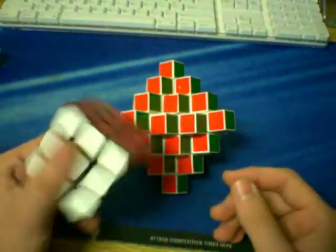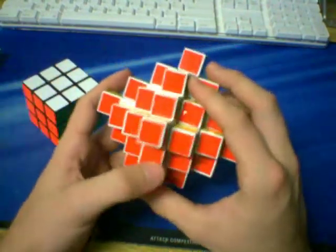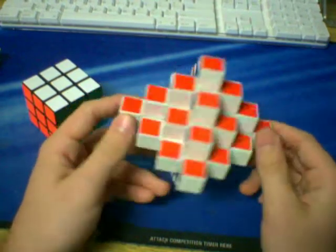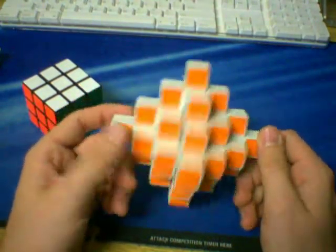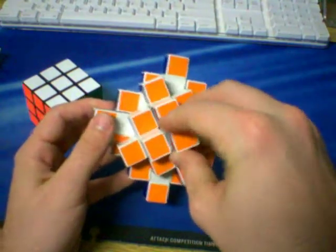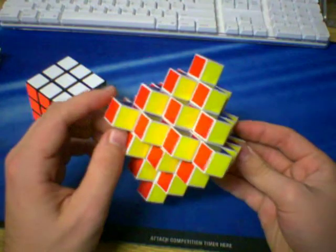So focus on solving it like a 3x3. Ignore the colors that you don't need to pay attention to, like the side when you're doing an edge piece. And just focus on solving it correctly. It's not that bad. Other than orienting the center piece, which you don't have to do on a normal 3x3, this puzzle is actually very simple.